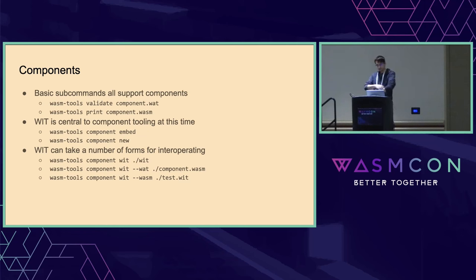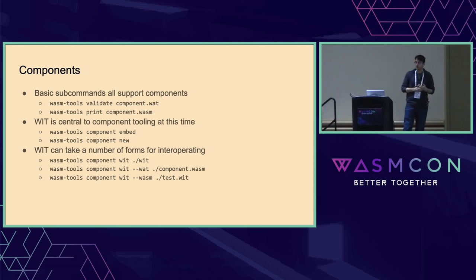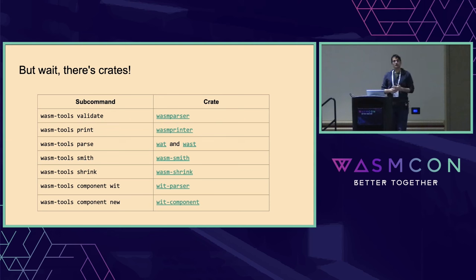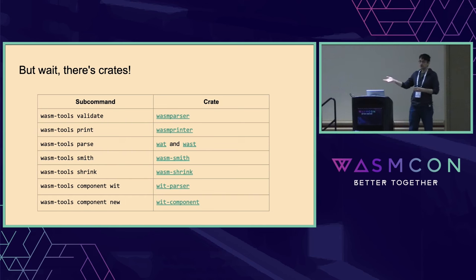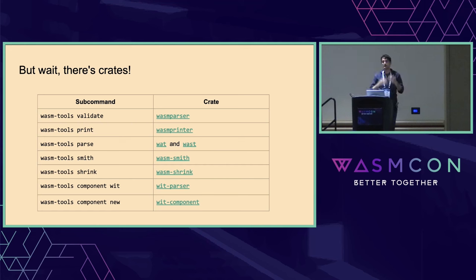That's all we've got for components. The general idea: we have a lot of support in top-level commands for both components and modules. The creation of components is done through the low-level embed and new subcommands. WIT is a central part of the component model tooling, dealing with many formats of WIT — de-sugaring, viewing the WASM form, distributing it. The wasm-tools project also has all of these features exposed as crates, so if you're writing a Rust project you can pull them from crates.io to parse, print, generate tests, or do fuzzing without spawning a process.